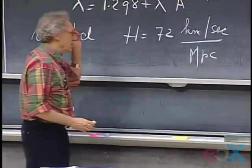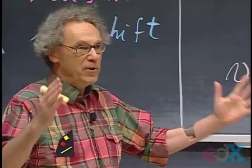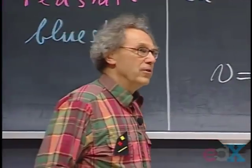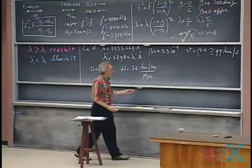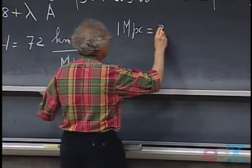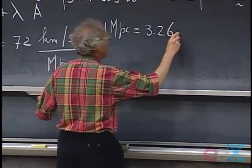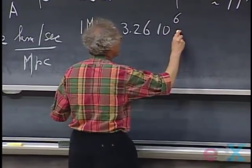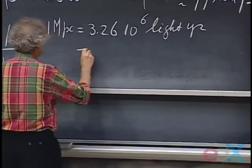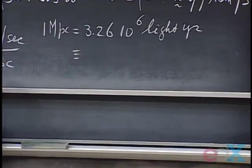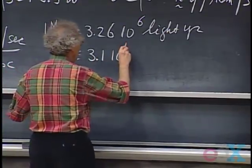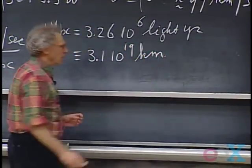A megaparsec is a unit of distance used in astronomy. One megaparsec is 3.26 times 10 to the 6 light years. If you want that in kilometers, it's about 3.1 times 10 to the 19 kilometers.